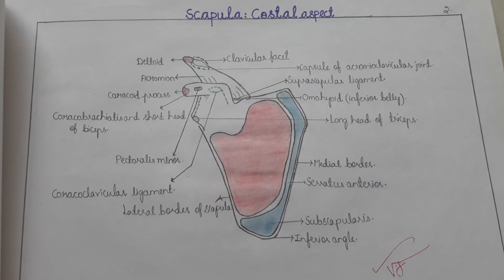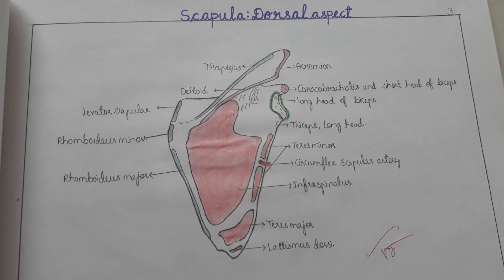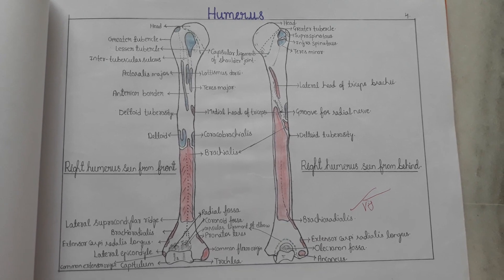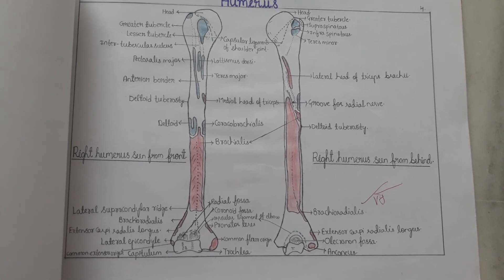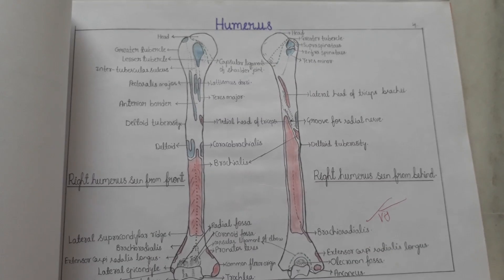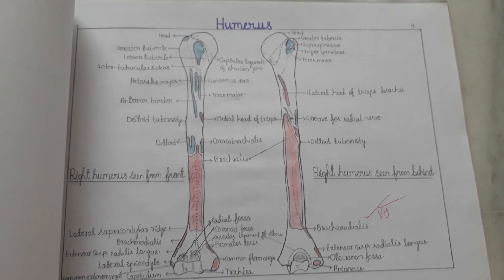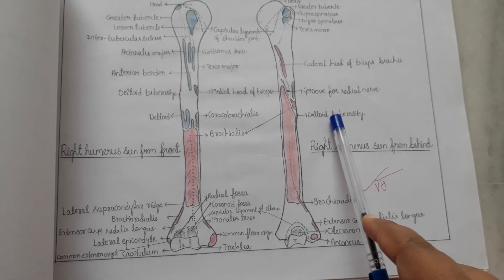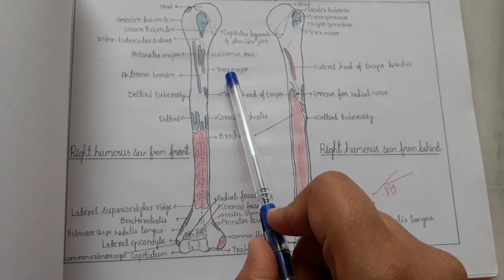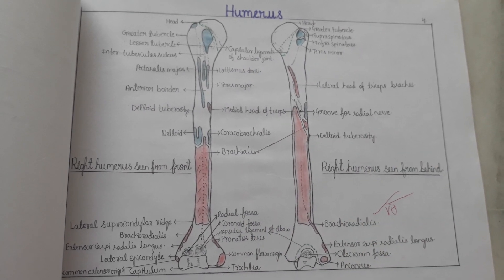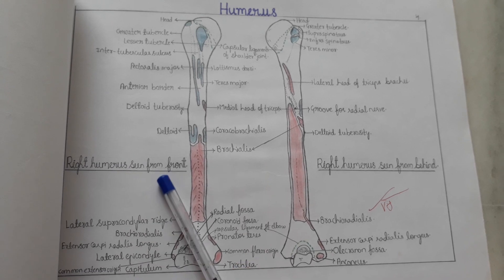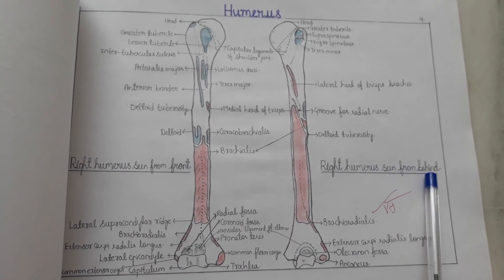Scapula — costal aspect and dorsal aspect. This is the humerus seen from behind. You can see the deltoid tuberosity and groove for radial nerve. This is the capsular ligament for the shoulder joint — from the front and from behind.